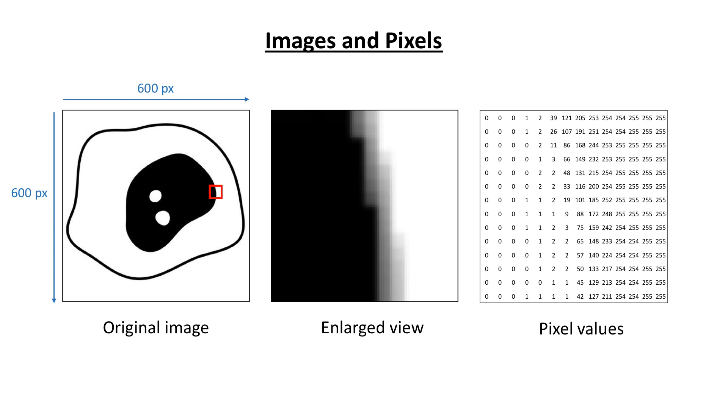However looking at the numbers directly makes it pretty hard for us to visualize what the image contains. Hence the value of the pixel is conventionally displayed as a grey tone.